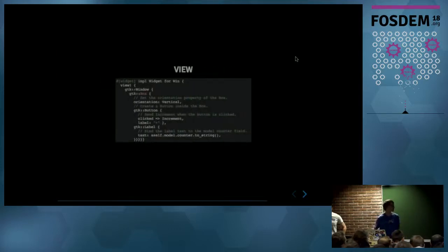And then we have the view. So it's still in the impl widget and we use the view macro and we now have this declarative syntax. So we can create GTK widgets and nest them and also set their properties. We can connect the click event, for instance, which will send the increment message in this case.